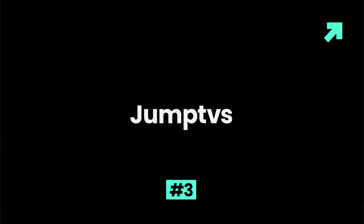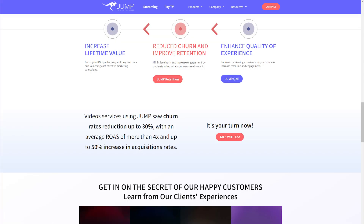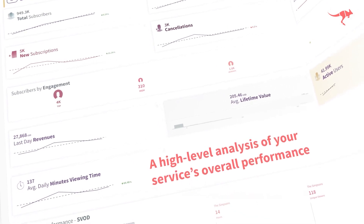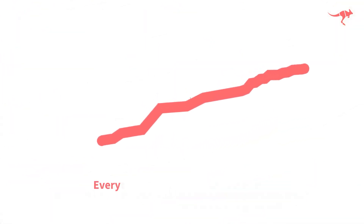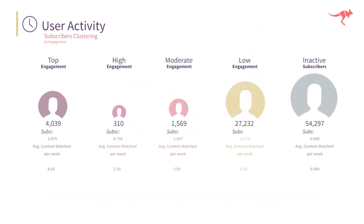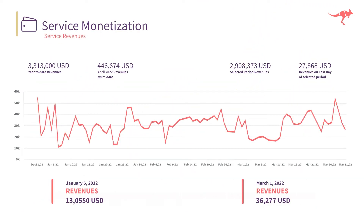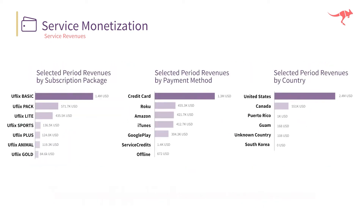JumpTVS is a remarkable AI-powered video editing tool that serves as a practical data platform for the video industry. In the realm of video, content may reign supreme, but data is often regarded as the queen. With JumpTVS, you can receive daily business video analysis, obtain a comprehensive understanding of user behaviors, enhance user experiences across multiple devices, and track the performance of your marketing campaigns, content recommendations, and marketing actions.